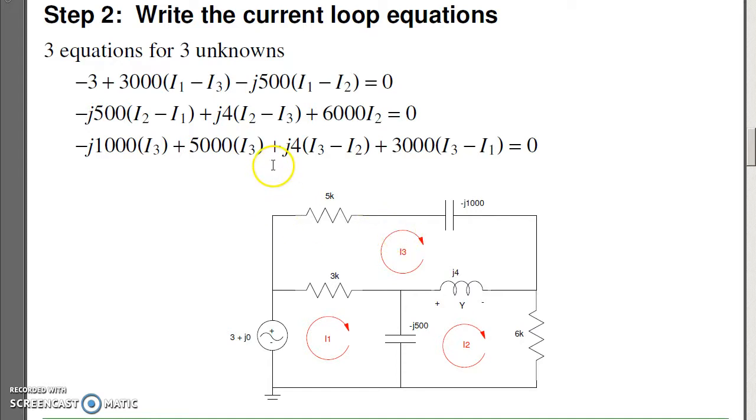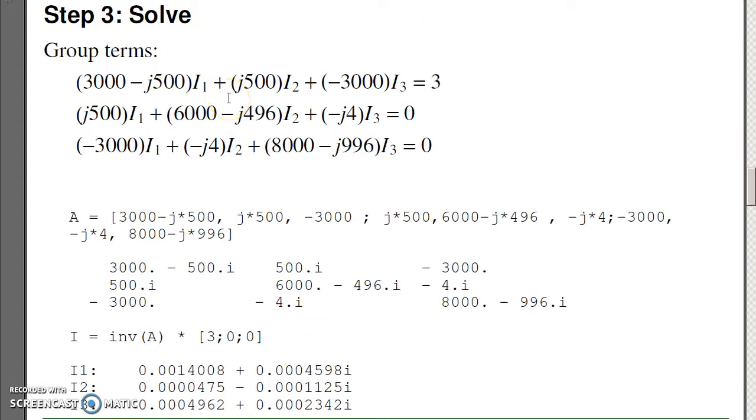This gives you three equations, three unknowns. Now solve. To solve, exactly like we did back in DC, group the terms, place in matrix form and solve, except that now some of the terms are complex. MATLAB doesn't really care. To solve in MATLAB, just use the inverse of A times B. I get complex numbers.